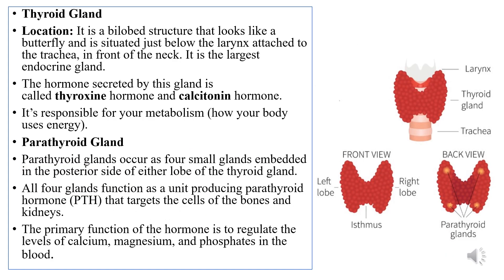In the brain region of the human body, the three very important glands that are part of the endocrine system are the hypothalamus, the pineal body, and the pituitary gland. Now we will move forward and look at the other glands present in different locations of the human body that are also part of the endocrine system.